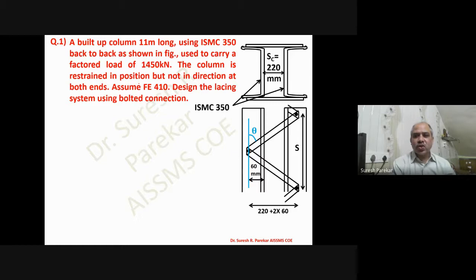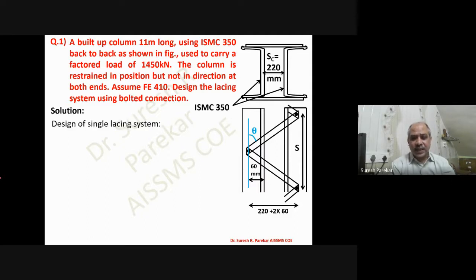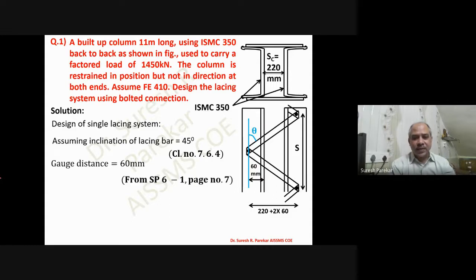We are using ISMC 350, and the distance between channels (spacing of channel), S_c, is given as 220 mm. For ISMC 350, the gauge distance G is 60 mm — this value is found in the steel table, not in IS code or IS 808. Assuming an angle of 45 degrees (clause 7.6.4 specifies 40 to 70 degrees), and gauge distance G = 60 mm from SP 6-1, page 7.